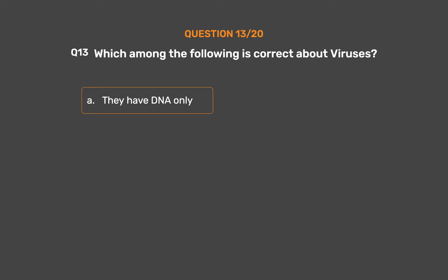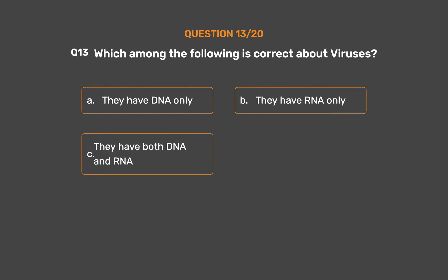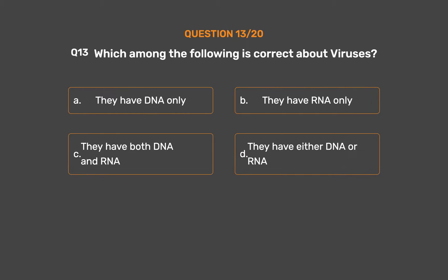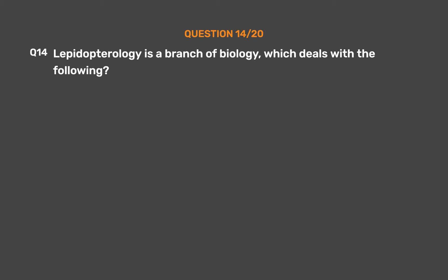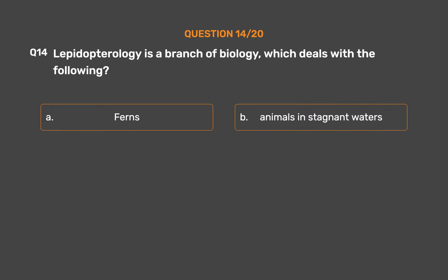Question number thirteen. Which among the following is correct about viruses? Option A: They have DNA only. Option B: They have RNA only. Option C: They have both DNA and RNA. Option D: They have either DNA or RNA.